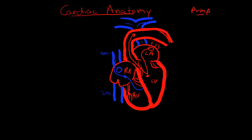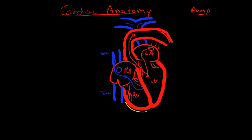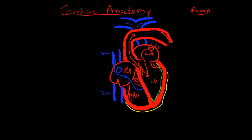Now let's talk about the various components of the heart. The heart is made up of three different tissues: the outermost tissue is called the pericardium, the muscular middle layer is called the myocardium, and then lining all the chambers on the inside is called the endocardium.